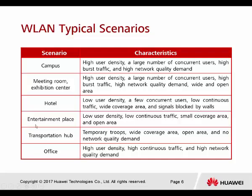Hotels also have wide coverage area and signal blocked by walls. The next scenario is the entertainment place: low user density, low continuous traffic, small coverage area, and open area. At an entertainment place, fewer people connect to wireless, and even if they do, they rarely browse the web — it's only very low continuous traffic.